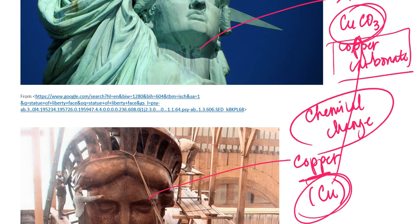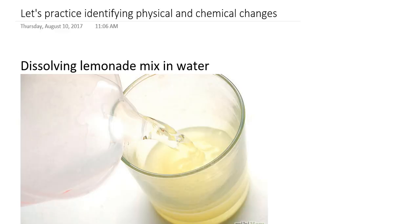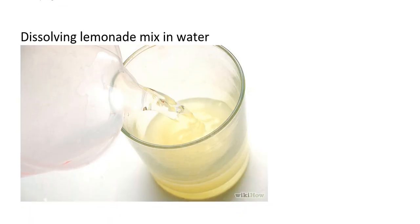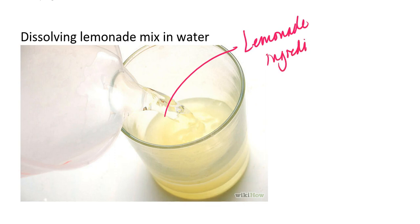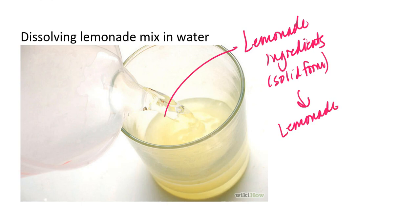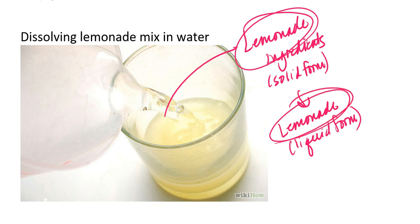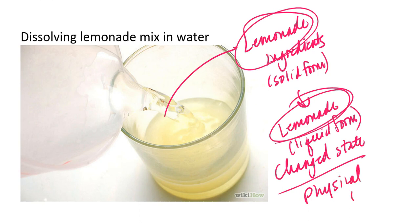So let's go through some additional examples of identifying physical and chemical changes. If I'm dissolving lemonade mix in water — basically I have my lemonade ingredients, which are lemon juice and sugar in solid form, to start, and then I'm dissolving it, in which case I'll have lemonade in a liquid form. Notice that we have lemonade at the beginning and lemonade at the end — all we've done is changed the state. Since we've just changed the state, this is considered a physical change.